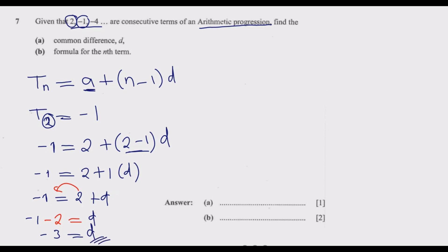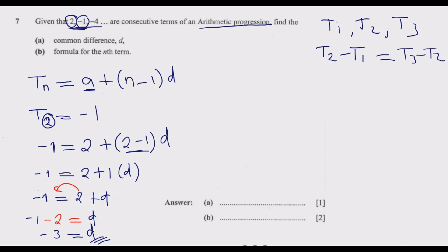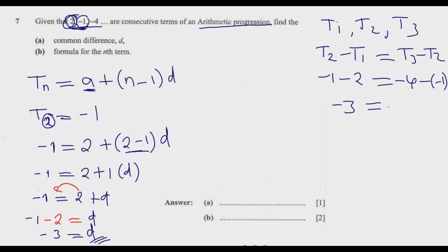Alternatively, you have T1, T2, T3, and to find the common difference just say T2 minus T1, which is the same as T3 minus T2. So T2 minus T1 is negative 1 minus 2, which gives negative 3. And on the other side, T3 minus T2 is negative 4 minus negative 1, which is negative 4 plus 1, giving negative 3. So the common difference is negative 3.